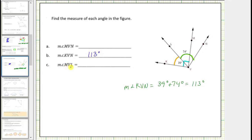Next, let's find the measure of angle MVL. If we focus on the right angle KVM, notice how this tells us that angle MVL and angle LVK are complementary, meaning the sum of their measures must equal 90 degrees. Therefore, the measure of angle MVL must equal 90 degrees minus 39 degrees, which equals 51 degrees.